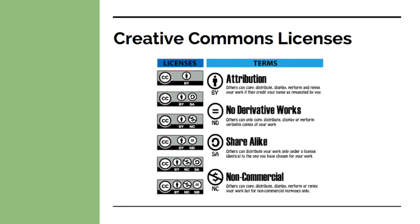Often the full reuse rights take the form of a Creative Commons license. Creative Commons licenses allow authors to retain their copyright but communicate to others how their work can be used. The true definition of open access with full reuse rights would require a CC BY license, but many open access publishers utilize a variety of licenses or allow the author to choose what is best for them. To learn more about Creative Commons licenses, visit creativecommons.org or watch the next video in this series, Copyright and Your Rights.